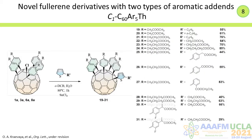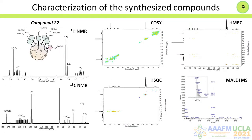Substitution of the chlorine atom with a thiophen residue led to the formation of novel C1-symmetrical fullerene derivatives with two types of aromatic addons. All synthesized compounds were characterized using various NMR experiments and MALDI mass spectrometry.